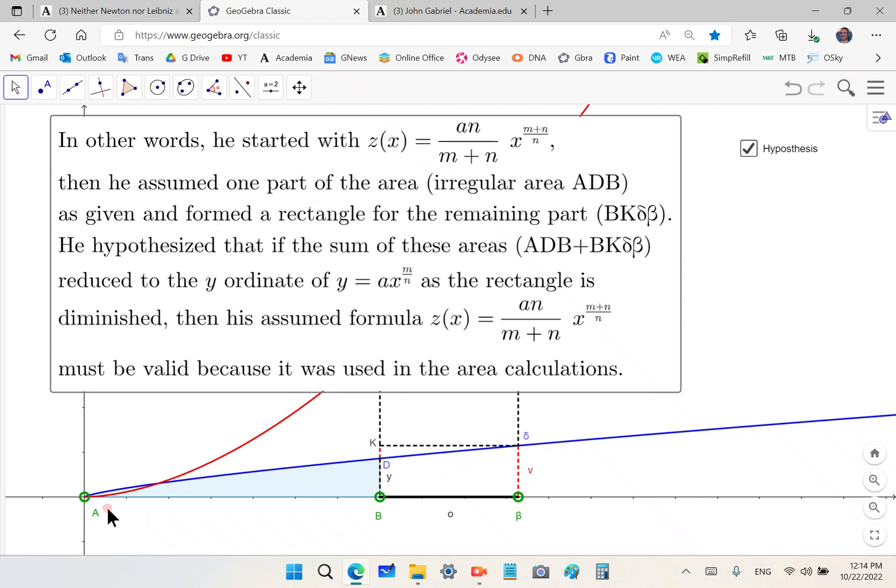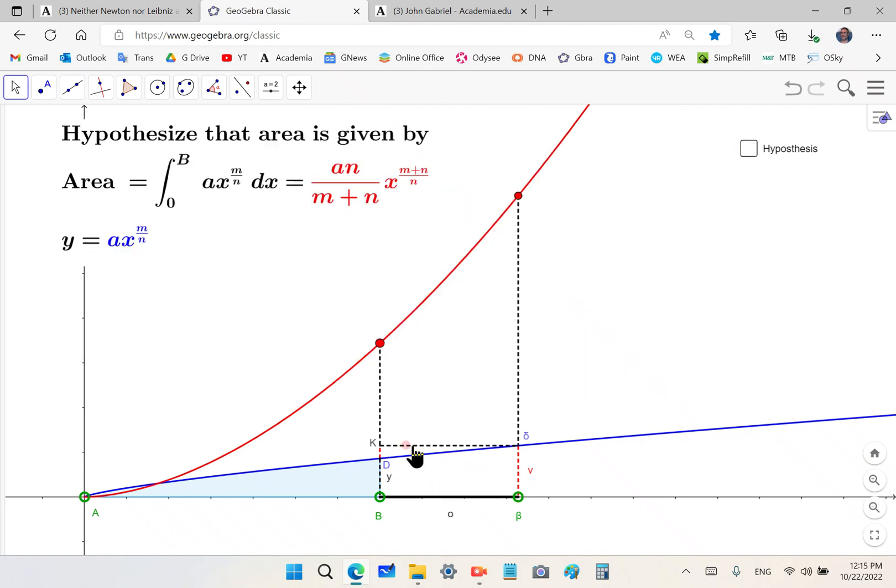It means that he starts off with the integral and he assumes that one part of the area of the total area from A to V (not from A to B, but from A to V) he assumes that this part here is given by the formula and he forms a rectangle as you see over here. This rectangle, the first one, not a trapezium, but K times delta V times B, and he says that's the remaining part.